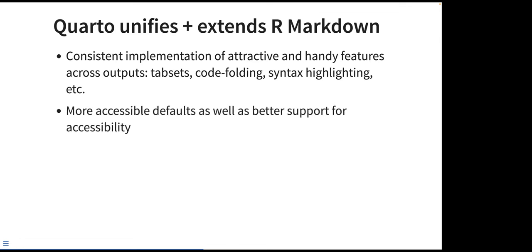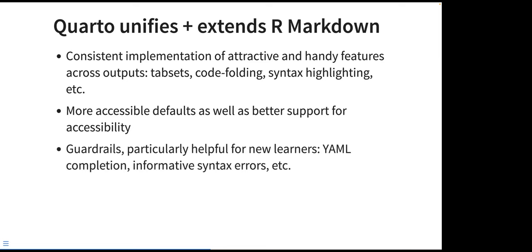Quarto also has more accessible defaults and better support for accessibility. Creating formats that abide by all accessibility guidelines isn't easy, but it's a great goal. If you stick to the defaults, you get color schemes and document behavior that abides by accessibility guidelines. As you do further customization, Quarto allows you to keep things accessible as well. It has guardrails, which are particularly helpful for new learners.